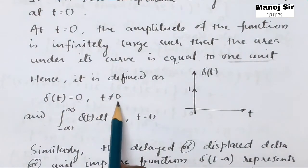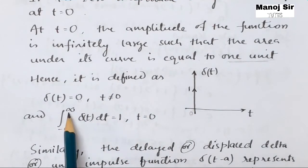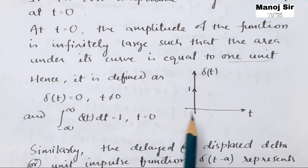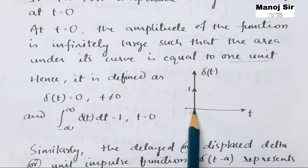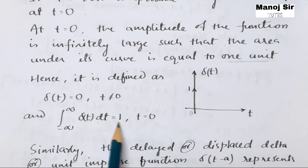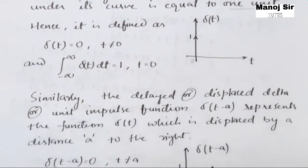Also, delta(t) equals zero when t is not equal to zero, and the integral from minus infinity to plus infinity of delta(t) dt equals one, evaluated at t equal to zero. At that point, the integral from minus infinity to plus infinity of delta(t) dt becomes one.